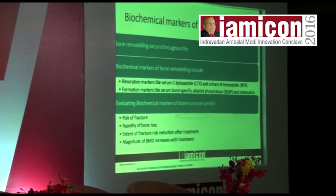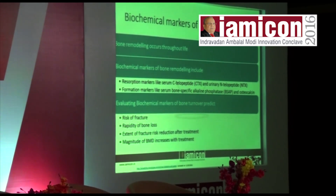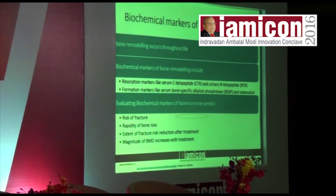Biochemical markers of bone turnover: bone remodeling occurs throughout life. Markers include resorption markers like serum C-telopeptide (CTX) and urinary N-telopeptide (NTX), and formation markers like serum bone-specific alkaline phosphatase and osteocalcin. These are used for evaluating risk of fracture, rapidity of bone loss, extent of fracture risk reduction after treatment, and magnitude of BMD increases with treatment.